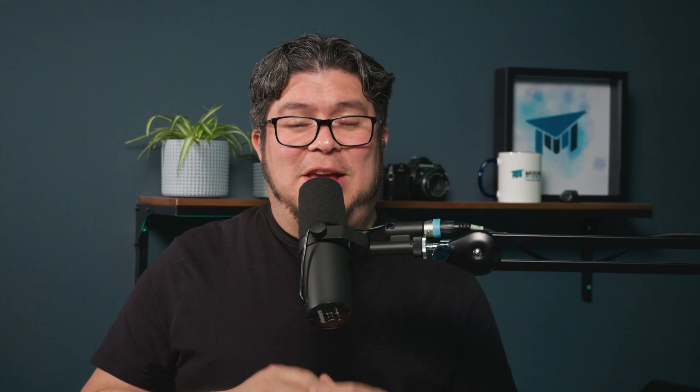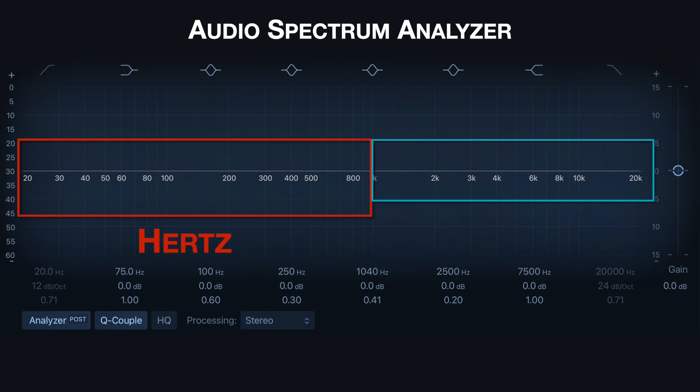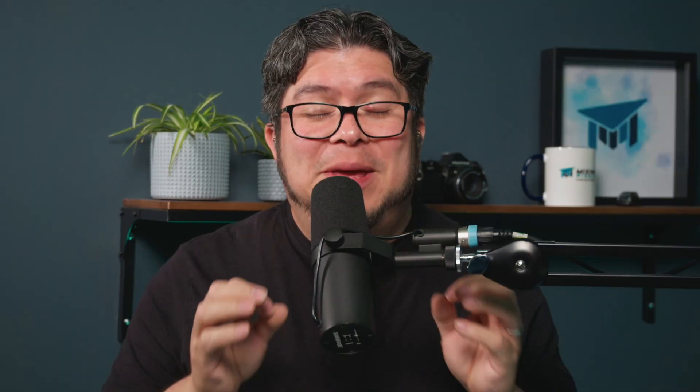There are many more reasons why feedback happens, but let's get to how to find it and get rid of it. For that, we're going to use the audio spectrum analyzer. The audio spectrum analyzer is a graphical representation of all the frequencies that humans can hear, using numbers from 20 to 1,000 — called hertz — and from 1,000 to 20,000 — called kilohertz. Every feedback you've ever heard can be located somewhere on the audio spectrum analyzer.